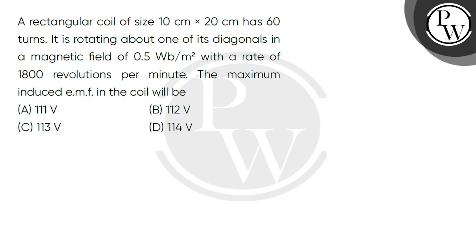Hello, let's read the question. A rectangular coil of size 10 cm × 20 cm has 60 turns. It is rotating about one of its diagonals in a magnetic field of 0.5 Wb/m² with a rate of 1800 revolutions per minute. The maximum induced EMF in the coil will be.